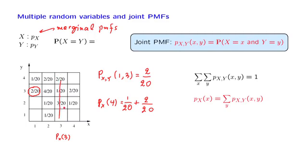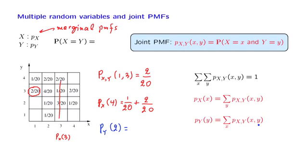Similarly, we can find the PMF of the random variable Y. For example, the probability that Y takes on the value 2 can be found as follows: you look at the probabilities of all pairs associated with that specific value of Y, and you add over all x's. So we fix Y equal to 2 and add over all pairs in that row. In this example, it would be 1 over 20 plus 3 over 20 plus 1 over 20.